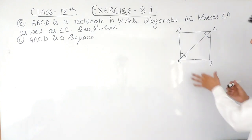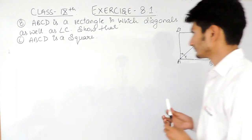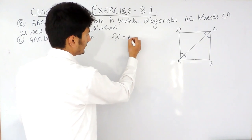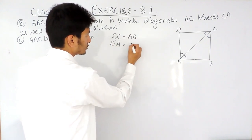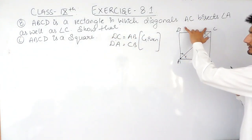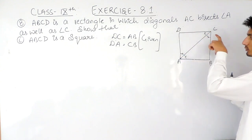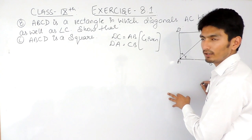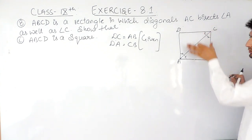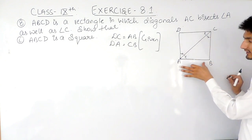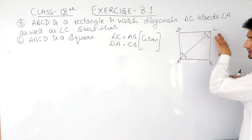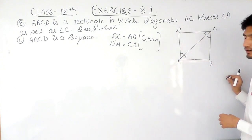A square means all four sides must be equal. DC is equal to AB, and DA equals CB — this is already given because it is a rectangle and a rectangle has its opposite sides equal. What you have to do is prove that this side is equal to this adjacent side. If opposite sides are already equal and we prove the adjacent sides equal too, all four sides will become equal.